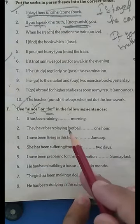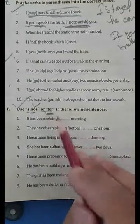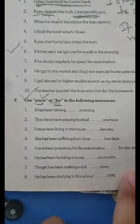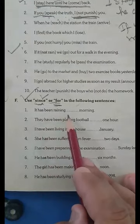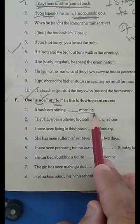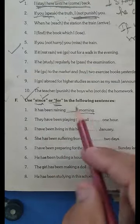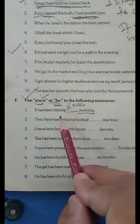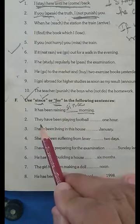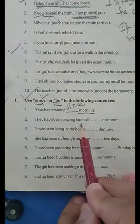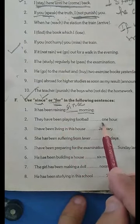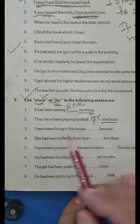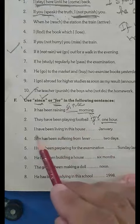In sentence one: 'It has been raining since morning.' Morning is an exact time, and since is used with exact time. Number two: 'They have been playing football for one hour.' One hour is a long period, so we use for. They have been playing football for one hour.